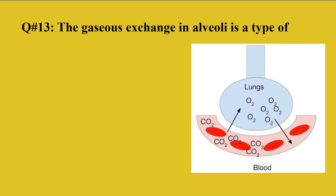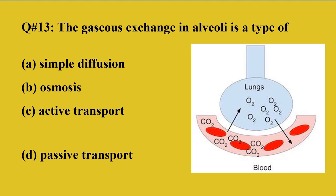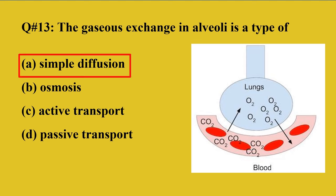Question number 13: The gaseous exchange in the alveoli is a type of — A: simple diffusion, B: osmosis, C: active transport, D: passive transport. The right option is A, simple diffusion. Gaseous exchange between the alveoli and the bloodstream takes place by simple diffusion. Since the partial pressure of oxygen is higher in the lungs and lower in the bloodstream, oxygen diffuses into the blood. Similarly, the partial pressure of carbon dioxide is higher in the blood, so carbon dioxide diffuses out into the lungs.